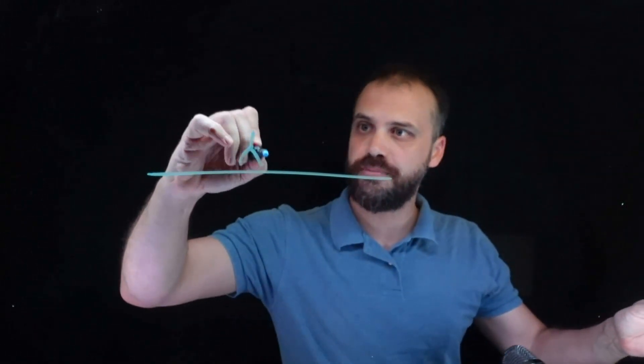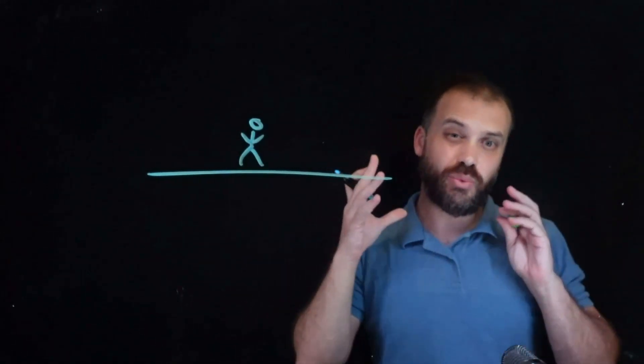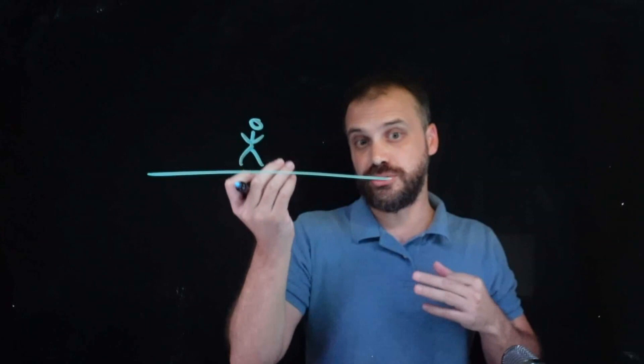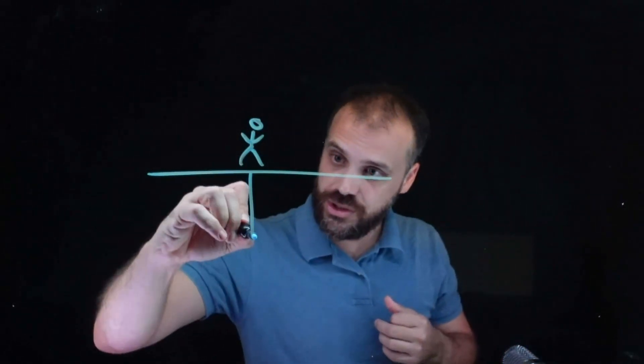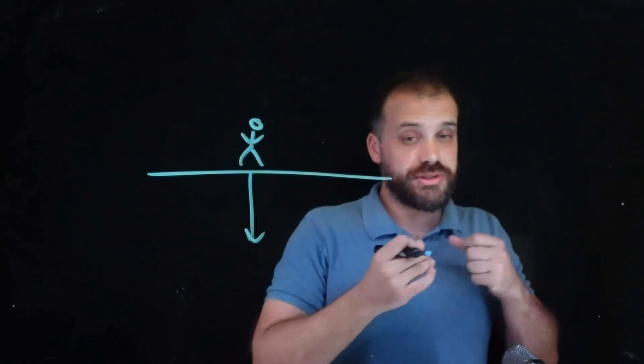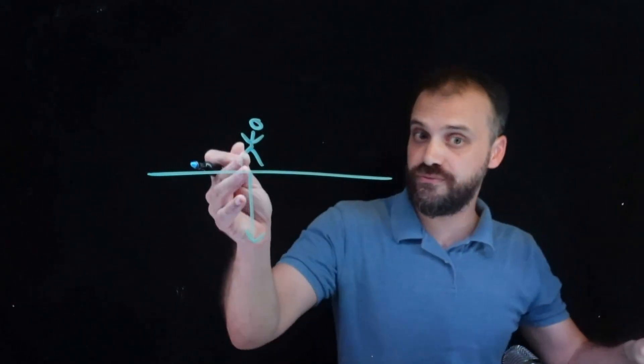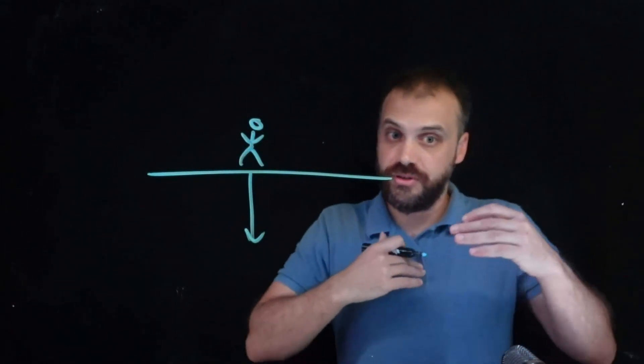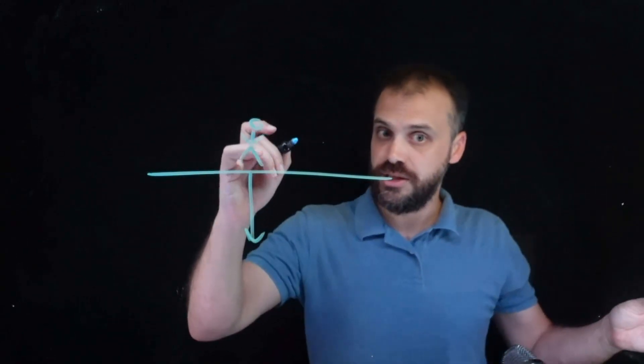We have some flat ground, we have a person on it. Now, because the person weighs something and because there's this thing called gravity, the person exerts a force on the ground. For every action, there is an equal and opposite reaction. For every force, there is an equal and opposite force. Newton said that.